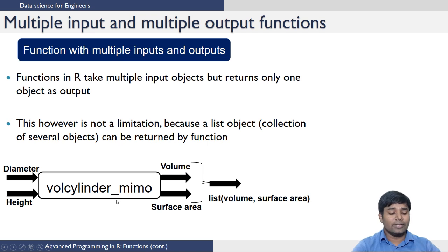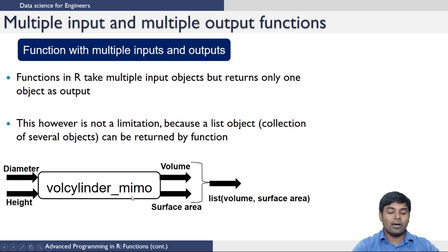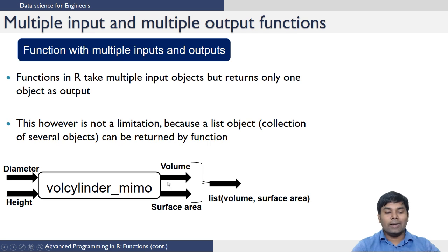Let us consider this example. I want to create a function called cylinder_memo which takes the diameter and height of a cylinder and returns the volume and surface area.